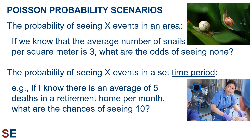One typical scenario is calculating the probability of seeing a certain number of events in a given area. For example, if we know the average number of snails per square meter is 3, and we're looking at a particular square meter, what are the odds of seeing none at all? Another typical scenario would be when we're interested in the probability of seeing events over a set period of time. For example, if we know the average number of deaths in a retirement home is 5 per month, what are the odds of seeing 10?